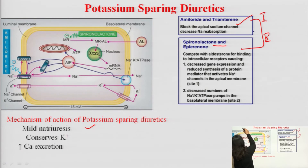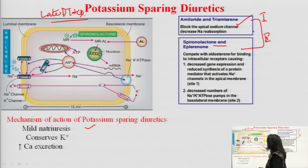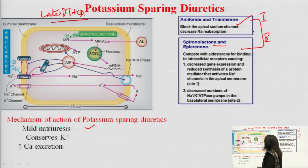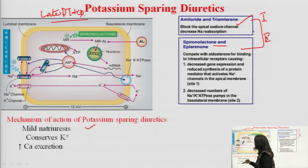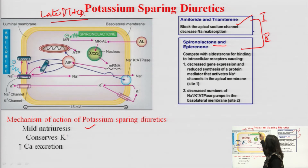This is a diagram of the epithelial cell of the late distal tubule and collecting duct — the site of action of potassium-sparing diuretics. Sodium channels are present on the luminal membrane of the renal epithelium, and a sodium-potassium ATPase pump is present on the basolateral membrane.